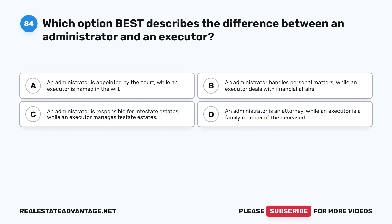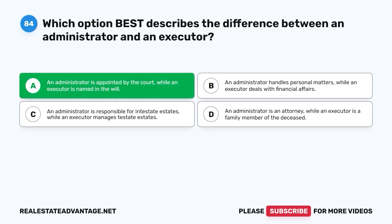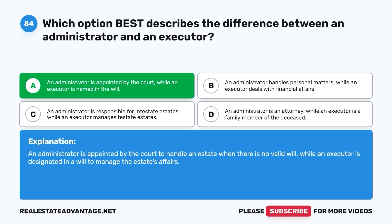Question 84: Which option best describes the difference between an administrator and an executor? A. An administrator is appointed by the court while an executor is named in the will. B. An administrator handles personal matters while an executor deals with financial affairs. C. An administrator is responsible for intestate estates while an executor manages testate estates. D. An administrator is an attorney while an executor is a family member. The correct answer is A. An administrator is appointed by the court to handle an estate when there is no valid will, while an executor is designated in a will to manage the estate's affairs.